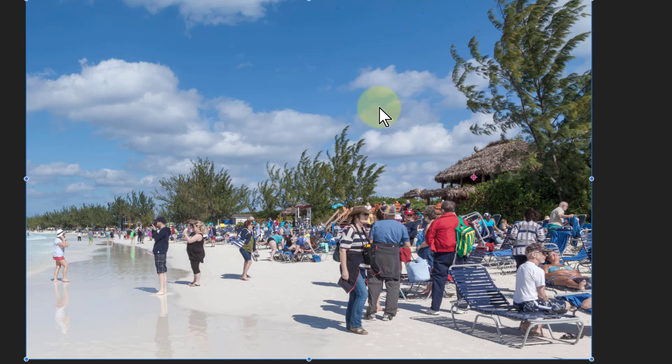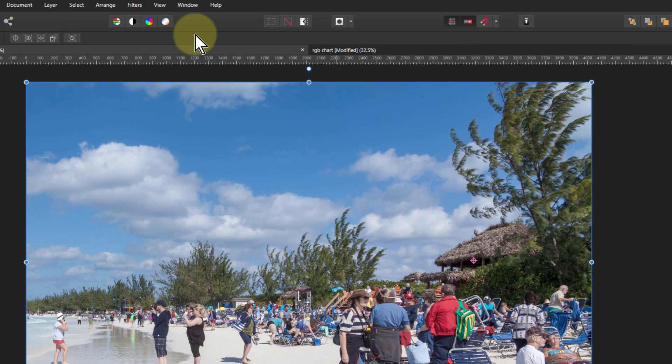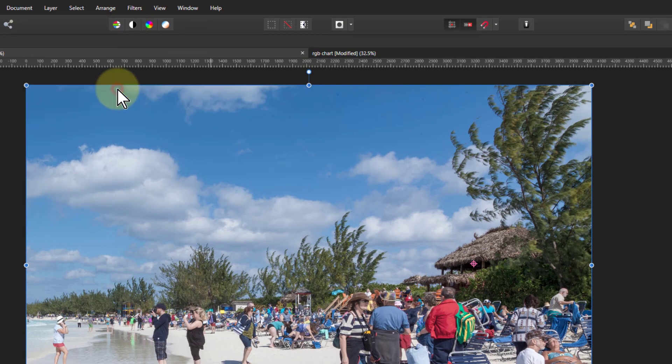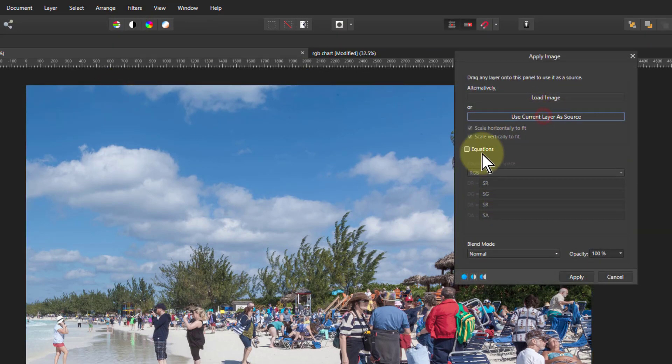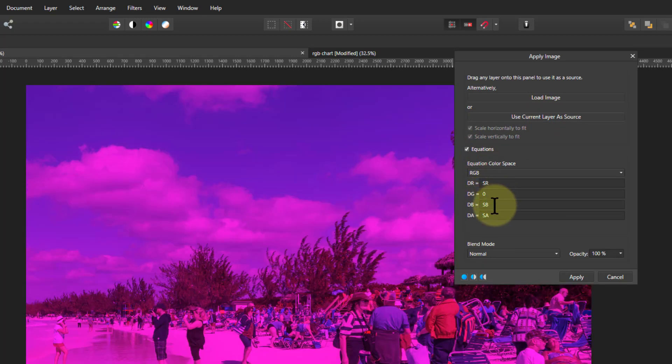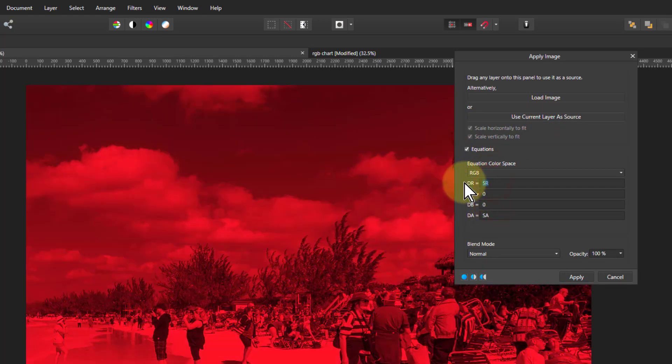Go over here to an image and go to filters, apply image, current layer, equations. I'll stick green and blue to 0 because I'm just going to work on the red channel. Paste in that formula.